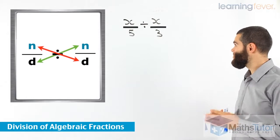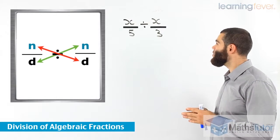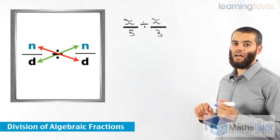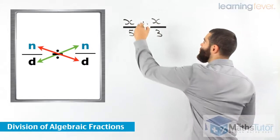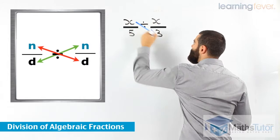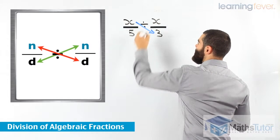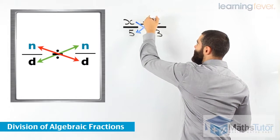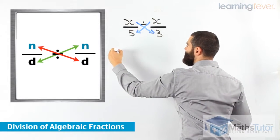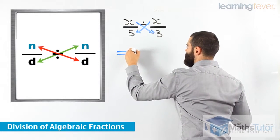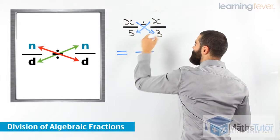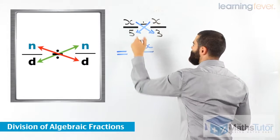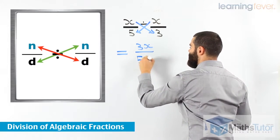Let's do some examples. We have here x over 5 divided by x over 3. We know we've got to start following this process. We multiply the first numerator with the second denominator, and then we multiply the second numerator with the first denominator. x times 3, 3x, and then x times 5, 5x.